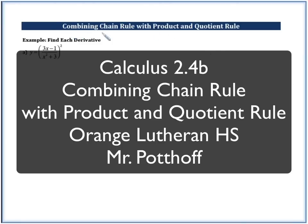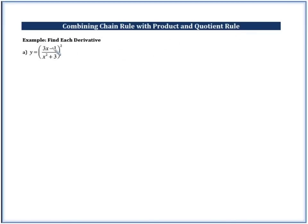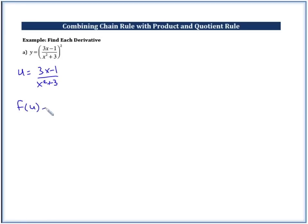Next we want to combine our chain rule with our product and quotient rules. We have all of this inside stuff squared, so we do see it as a composite function. We follow the same procedure where we find our inside function and our outside function, and then we find the derivatives of both of them.